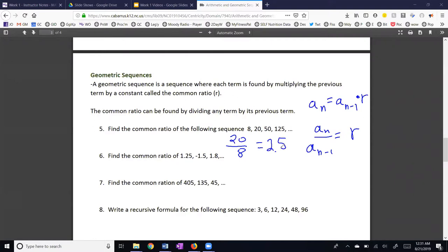Question 6, negative 1.5 divided by 1.25. And my common ratio here is negative 1.2. It is possible to have a common ratio that's negative. I'd like you to do number 7 as practice, and I think you'll find that the common ratio is a fraction less than 1 because our numbers are getting smaller.